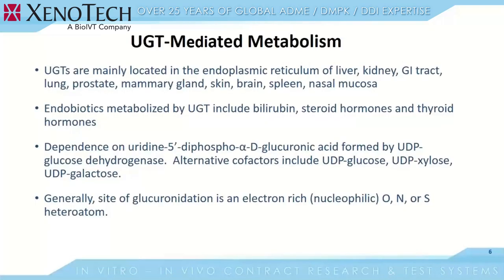Brief characteristics of UGT-mediated metabolism: UGTs are mainly located in the endoplasmic reticulum of liver, kidney, gastrointestinal tract, lung, prostate, mammary gland, skin, brain, spleen, and nasal mucosa.